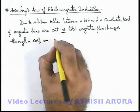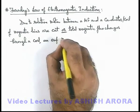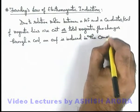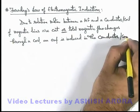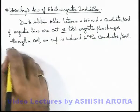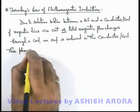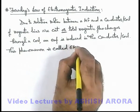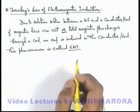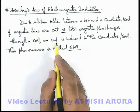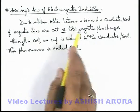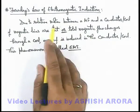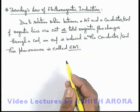We can say an EMF is induced in the conductor or coil, and this phenomenon is called electromagnetic induction. So electromagnetic induction is basically the induction of an EMF in a conductor or coil when the total magnetic flux through the coil changes or magnetic lines are cut, due to a relative motion between the magnetic field and a conductor or coil.